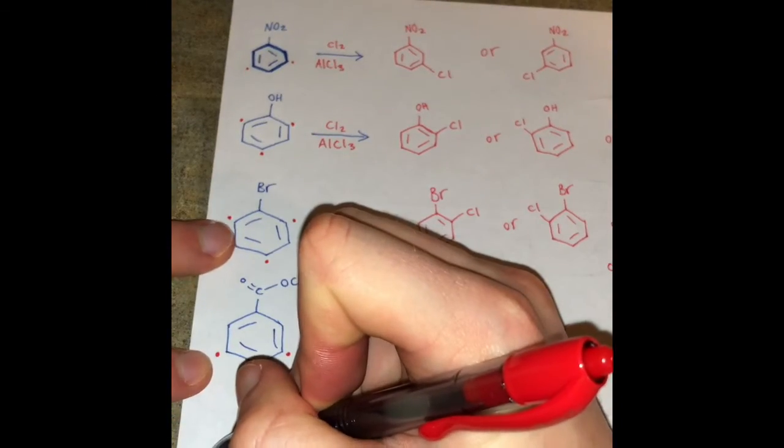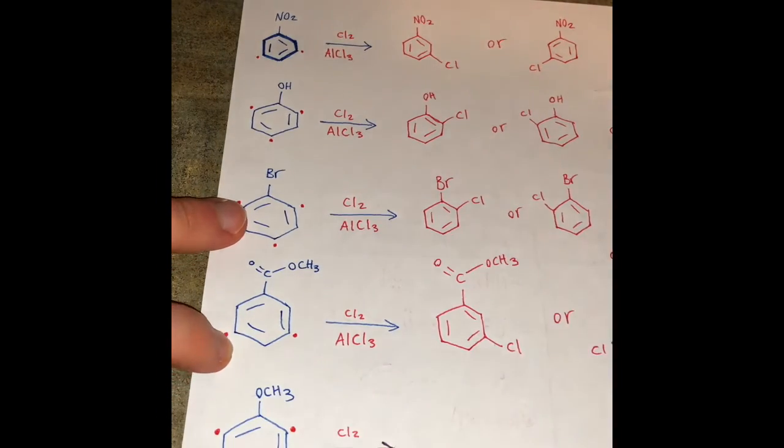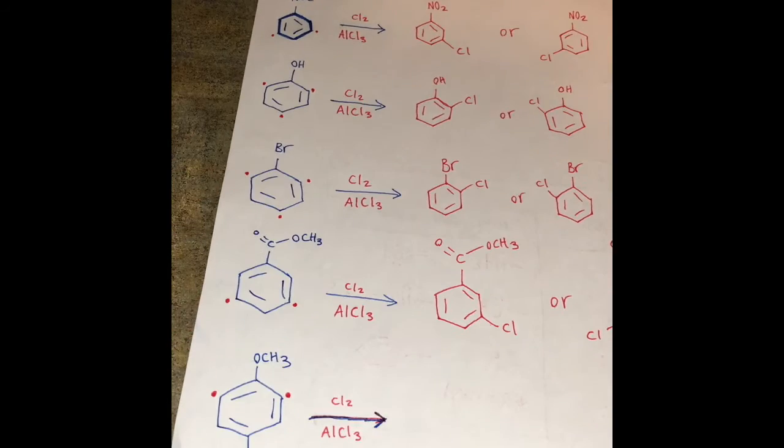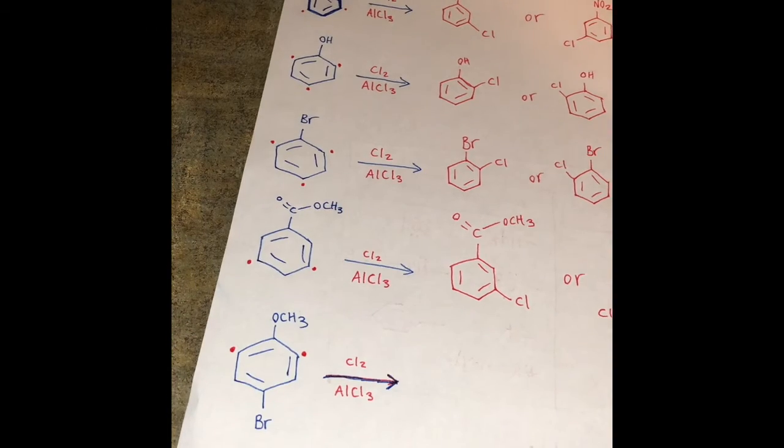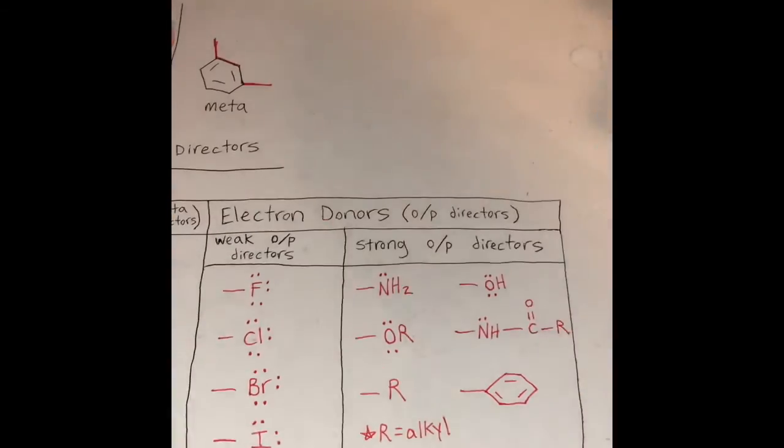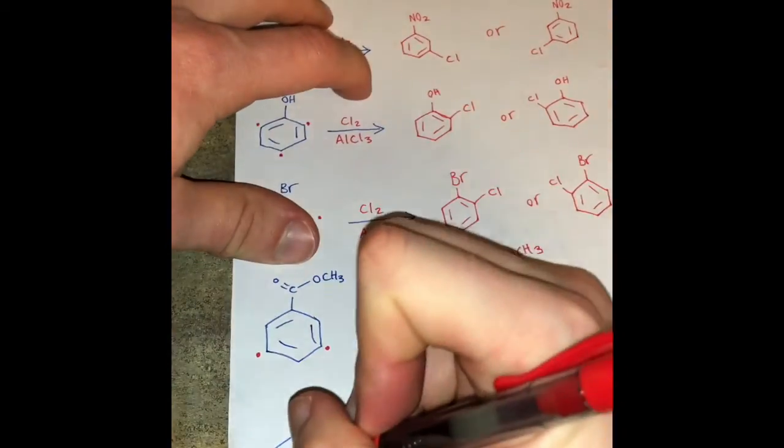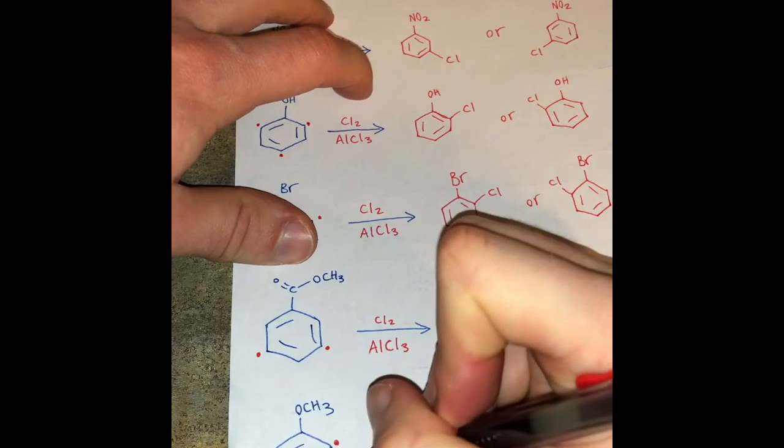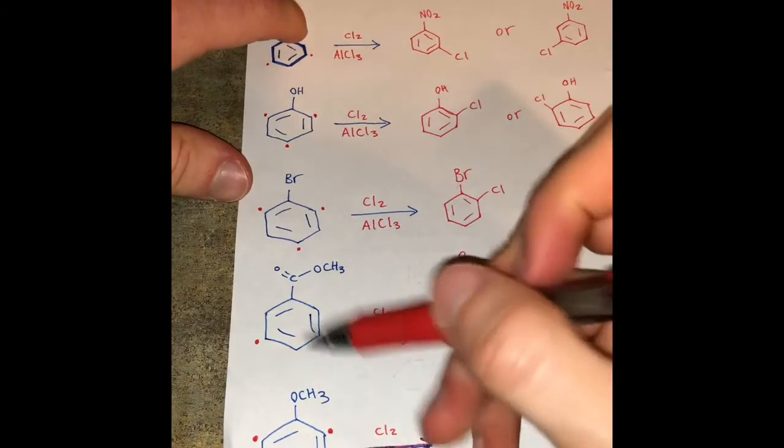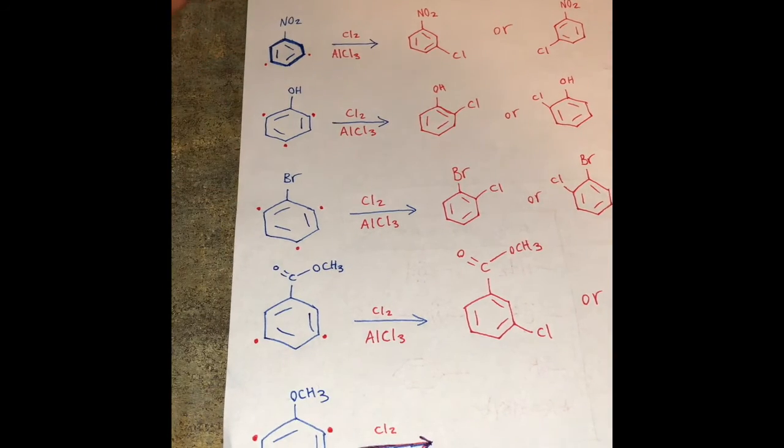So I'm going to put a dot for each ortho position. We won't put a dot down in the para position because bromine is already occupying that position. Now let's look at bromine. Bromine is a weak ortho para director. So I'm going to put dots at the ortho position and again like before I'm not going to put a dot in a para position because it is already occupied.